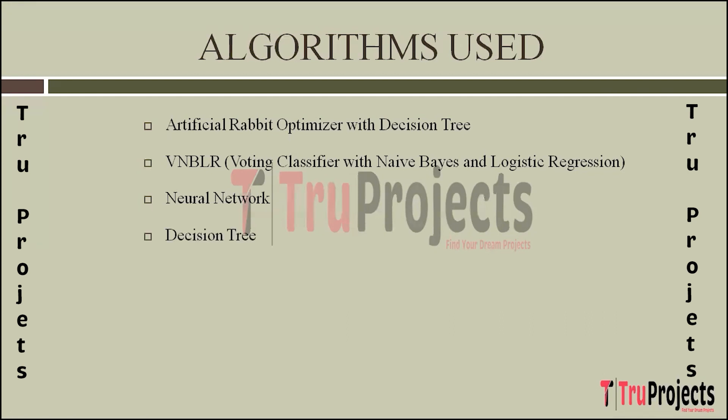The next algorithm is Decision Tree. Decision trees recursively partition the dataset into subsets based on features, forming a tree-like structure. Each node represents a decision based on feature conditions. In heart disease prediction, Decision Trees analyze patient attributes to make binary decisions leading to a final prediction. They are interpretable and effective for feature importance analysis.